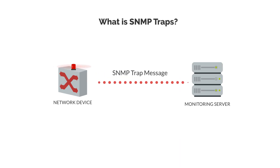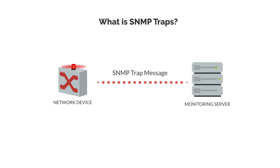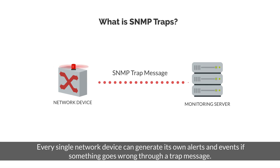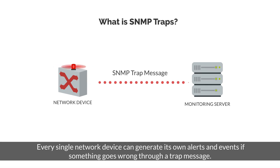An SNMP trap is different from SNMP polling. Every single network device can generate its own alerts and events if something goes wrong through a trap message.